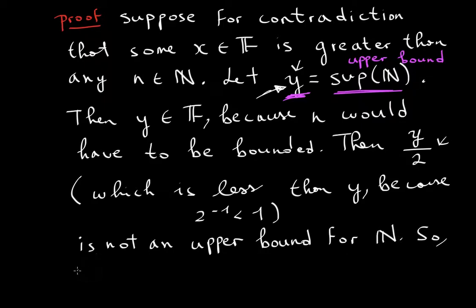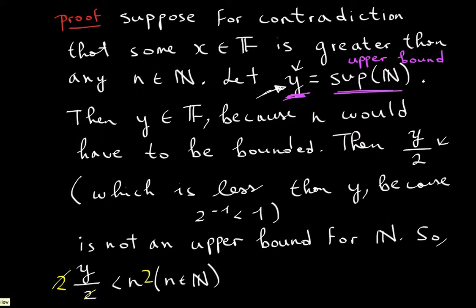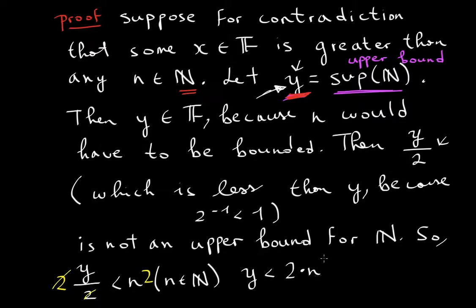So y divided by two will be less than n for some n that is an element of the naturals. If we multiply both sides by two, we see that y is less than two times n. However, we said that y was the supremum — everything in the natural numbers has to be lower than y, by the definition of an upper bound. But we see here that y is less than two times n, and we know that n is an element of the naturals. So how could y be greater than every single natural number, and at the same time still be less than some natural number multiplied by two? This is a clear contradiction.